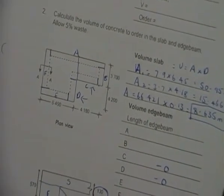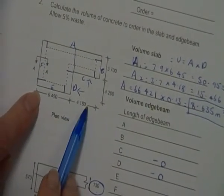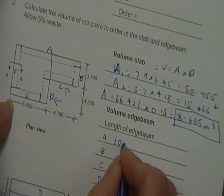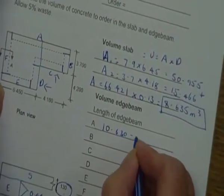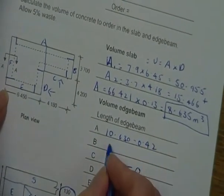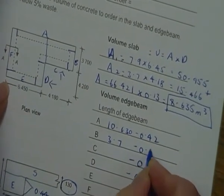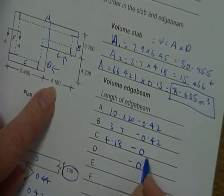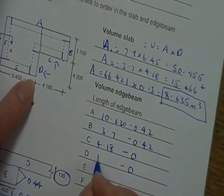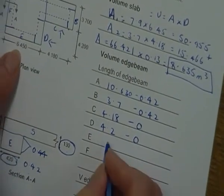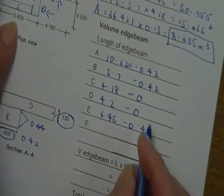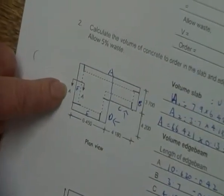So I'm going to go to each of the sides now and take off the 0.42 of each of them. Now A, I need to add these two figures together: 6.45 plus 4.10 is going to give me 10.630 minus 0.42. B is 3.7 minus 0.42. C, I've already got my zeros in place so I don't forget, 4.18 minus 0. D, 4.2 minus 0.